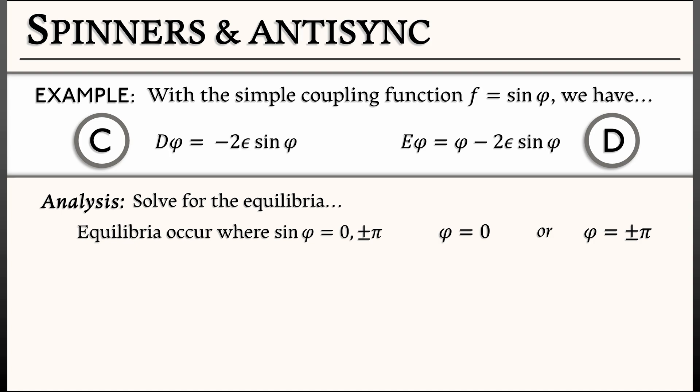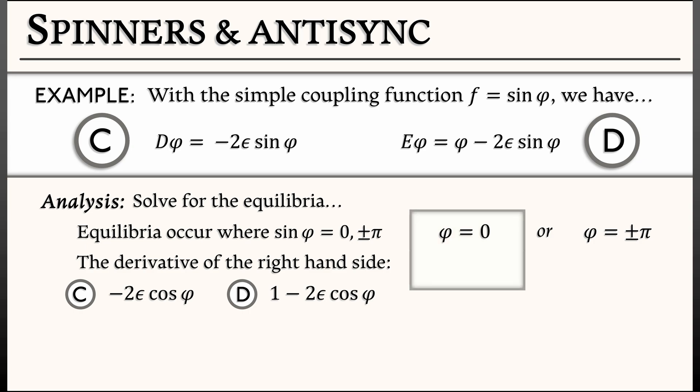To classify the stability, we look at the derivative of the right-hand side. In continuous time, that's -2ε cos φ. In discrete time, it's 1 - 2ε cos φ. We're taking the derivative with respect to the variable φ. When ε is a small positive number, we get a stable equilibrium at φ = 0 and an unstable equilibrium at φ = ±π.